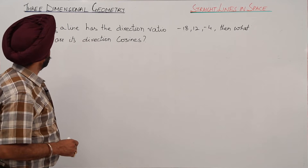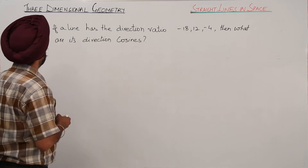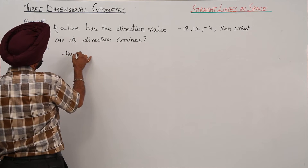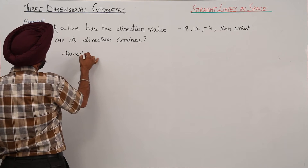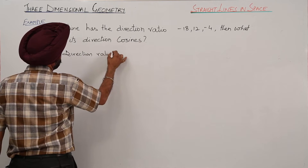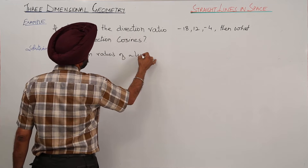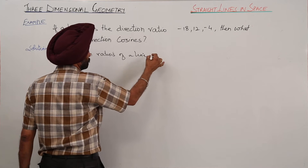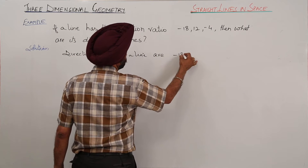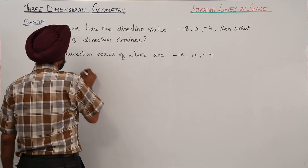In this example we have to find direction cosines when direction ratios are given. Direction ratios of a line are negative 18, 12, negative 4.